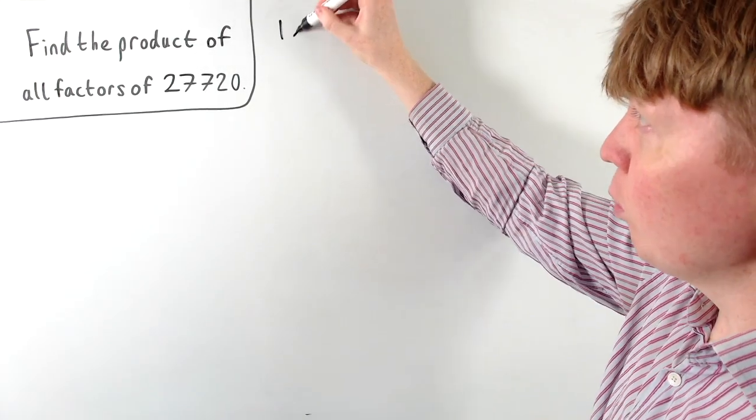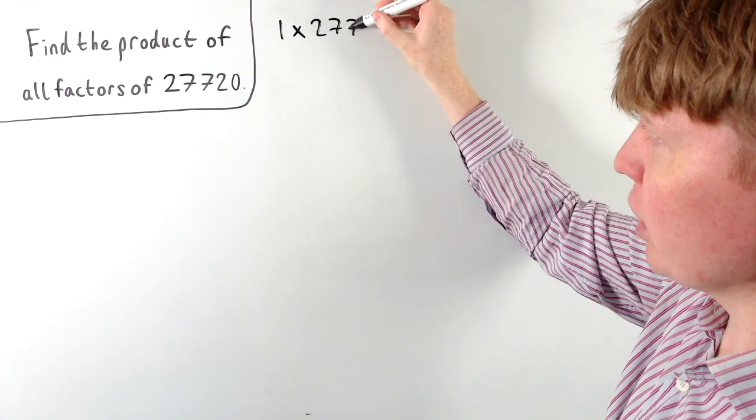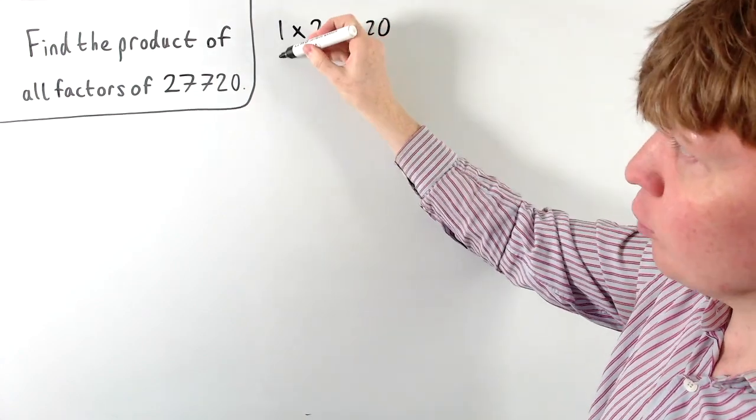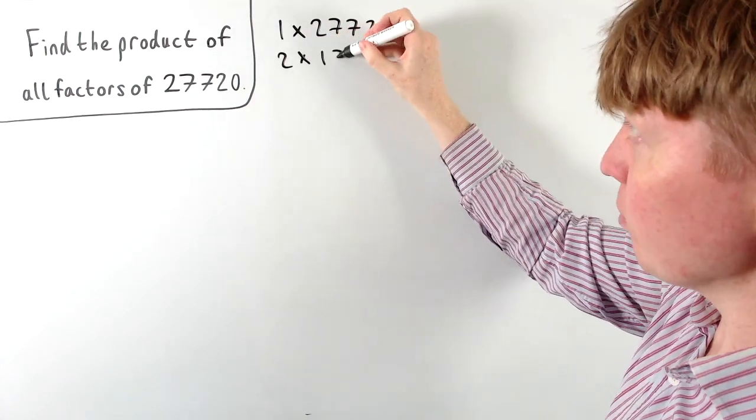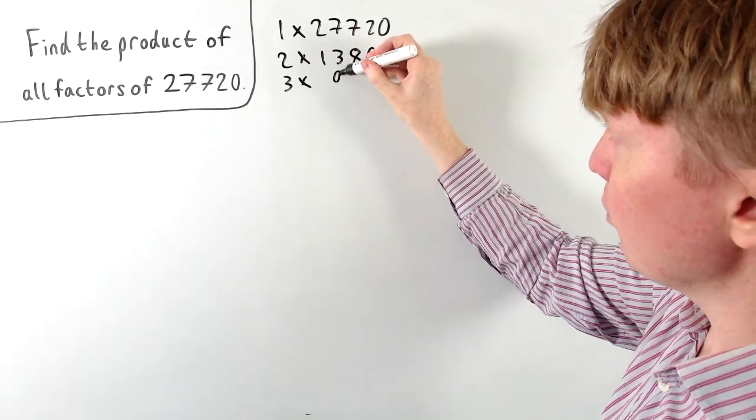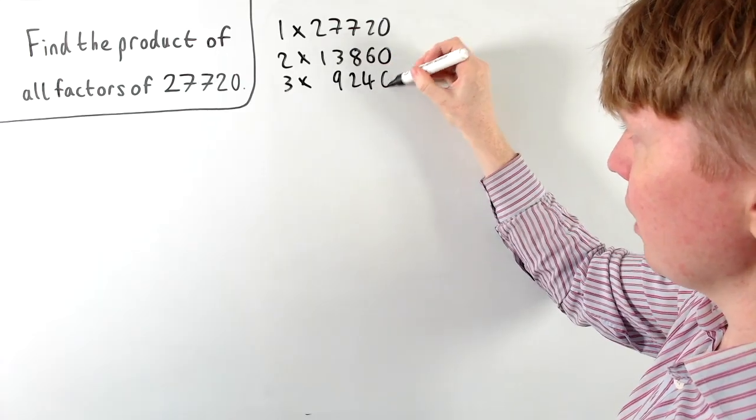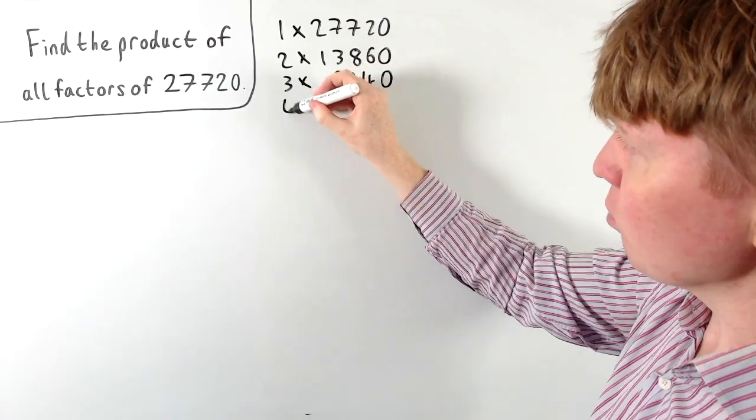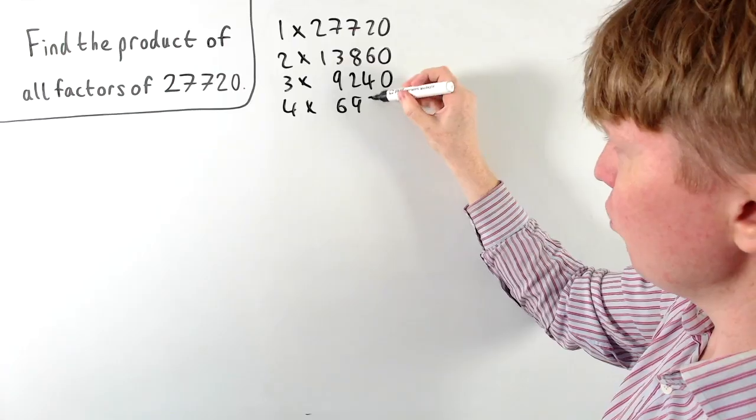But we could at least list them in factor pairs, so for example we have 1 times our original number. We can see that it's even, so we could write it as 2 times 13,860. And we could keep going like this, listing them in factor pairs, so 3 times 9,240, and we'd have 4 times 6,930.